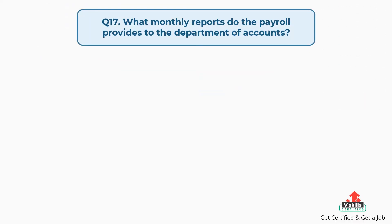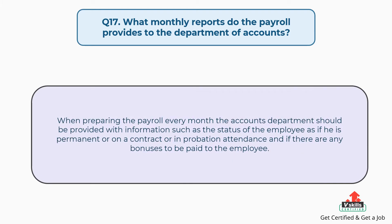Question number seventeen: What monthly reports does the payroll provide to the Department of Accounts? The answer is, when preparing the payroll every month, the Accounts Department should be provided with information such as the status of the employee — whether permanent, on contract, or on probation — attendance, and if there are any bonuses to be paid to the employee.